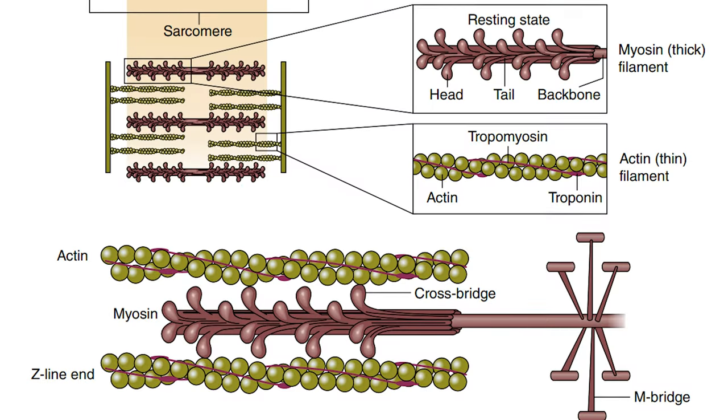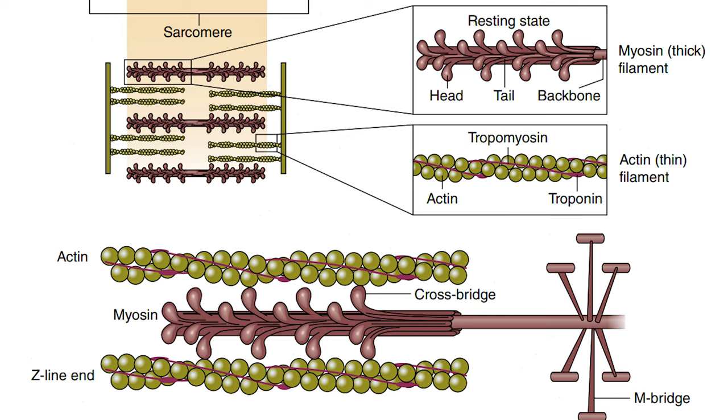Our muscles have small muscle fibers or cells, and inside those fibers there are protein filaments called myofilaments — specifically actin and myosin. When we talk about myofibrillar hypertrophy, we are talking about an increment in the numbers, density, and size of these two filaments. Actin and myosin are the protein filaments responsible for contractility and force production in the muscle.